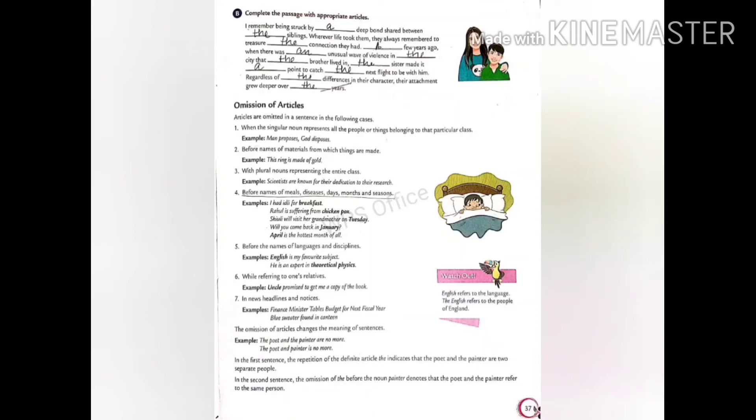Next, we have before the names of material nouns from which things are made. Yes, this ring is made of gold. For example, this ring is made up of gold. So here before gold, we do not put the. If we add, this would make the sentence awkward.